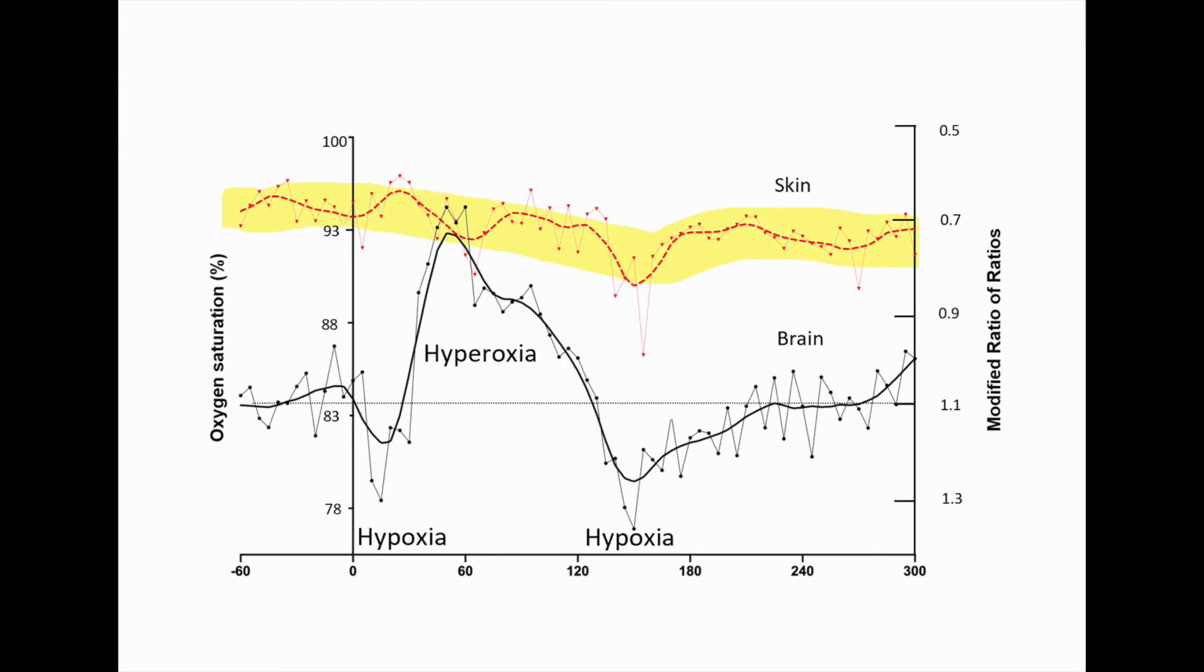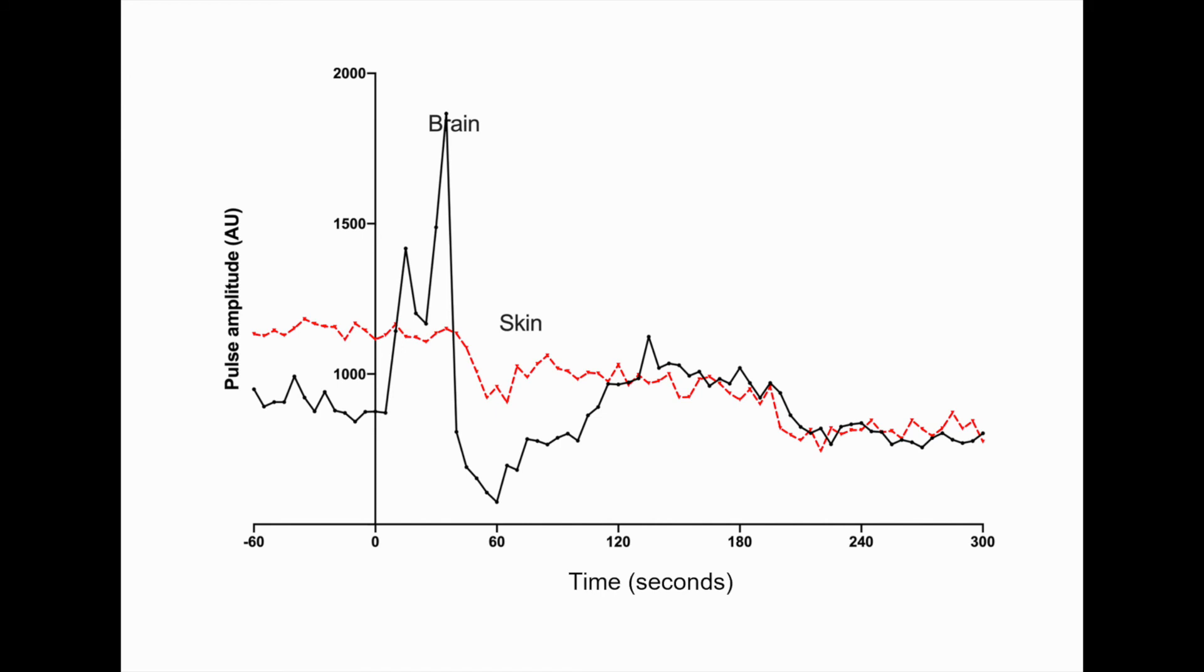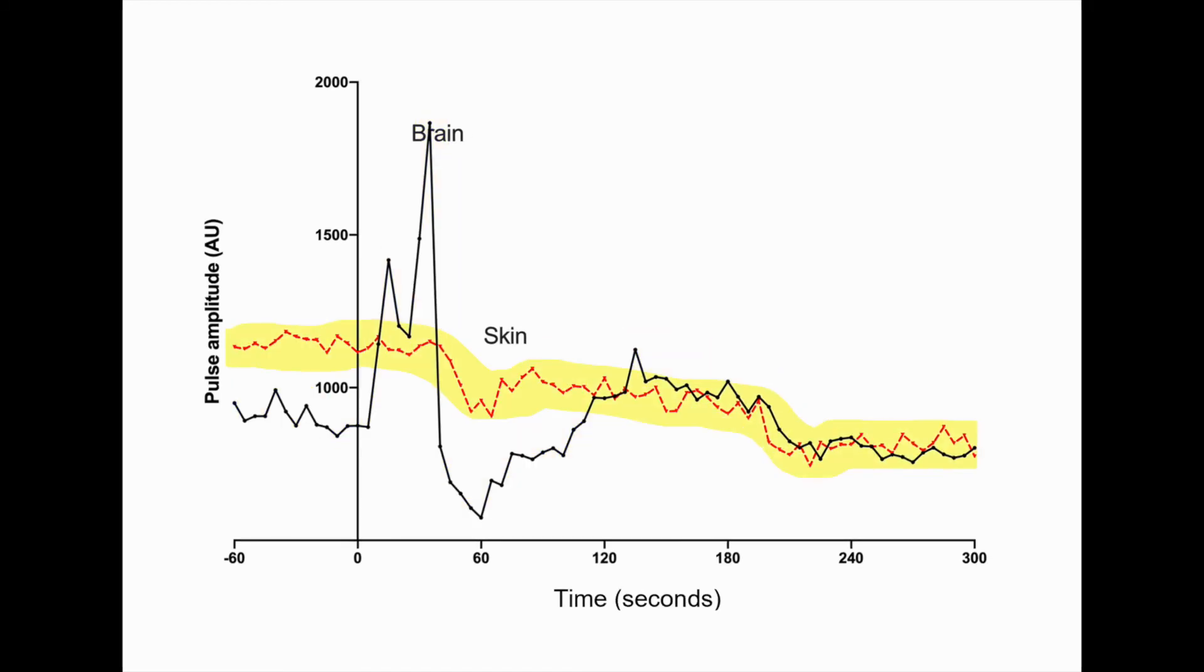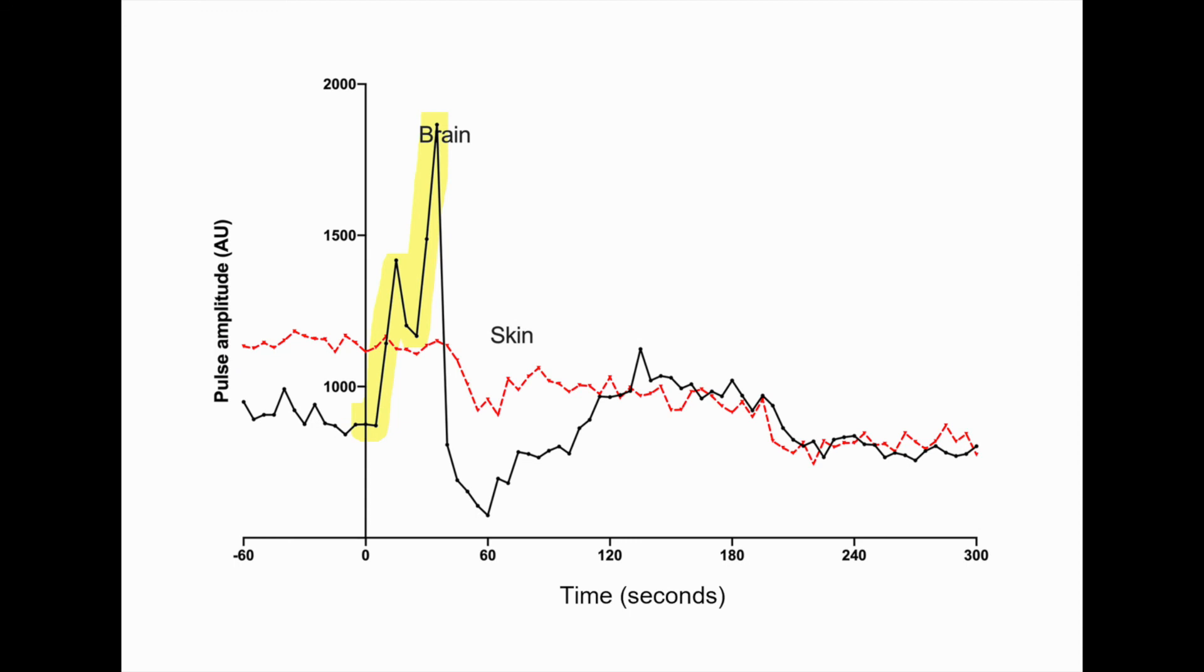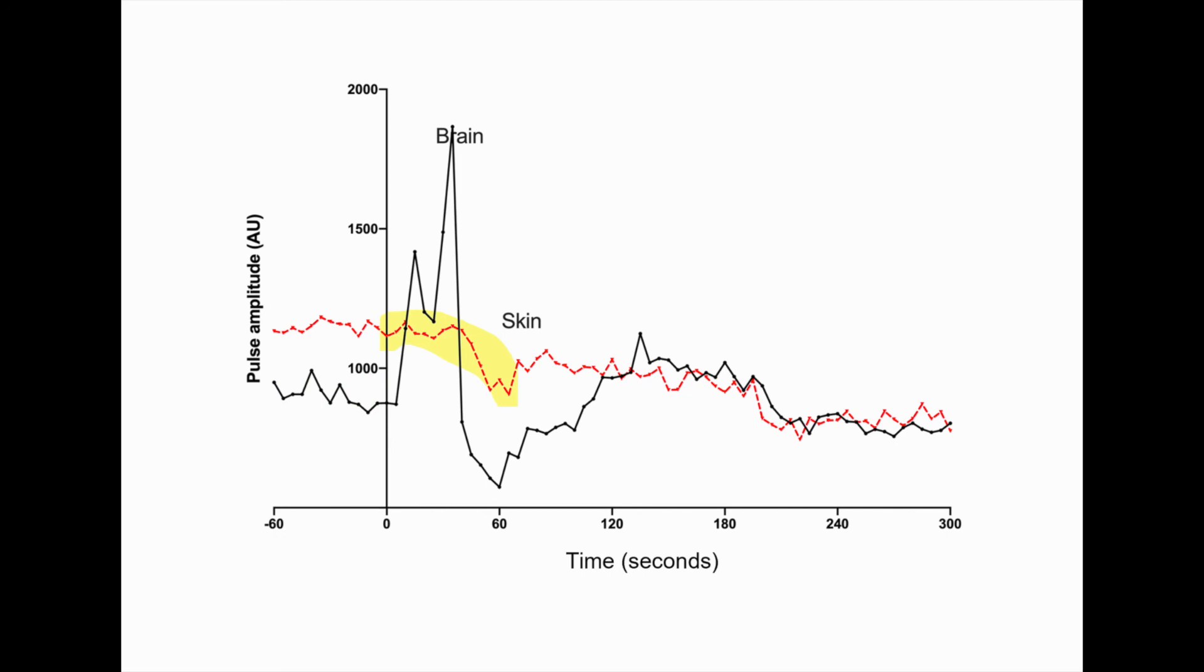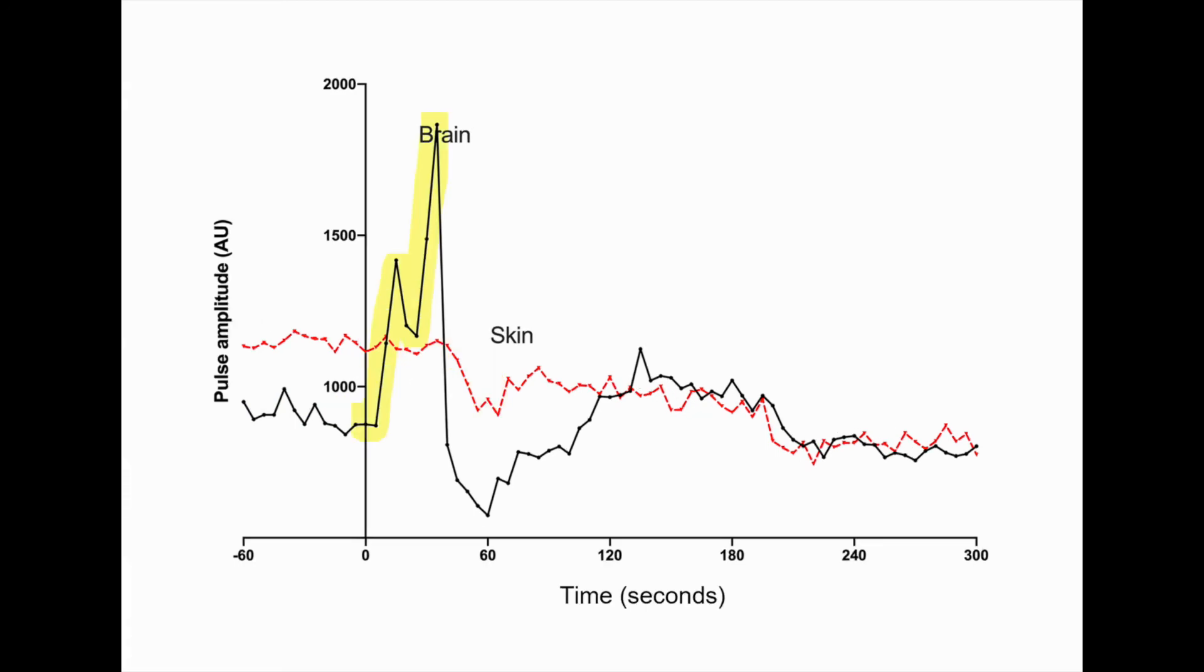It is important to note that the skin oxygen levels remain largely unchanged throughout this period. The bottom panel shows the changes in the pulse amplitude of the brain and skin following the injection of blood. At 60 seconds, the pulse amplitude increased dramatically compared to baseline levels, while the skin pulse amplitude levels did not change.